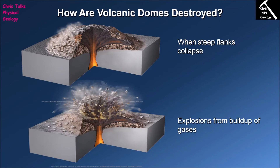The other way a volcanic dome can be destroyed is by explosion. These felsic lavas are very volatile-rich with lots of dissolved gas. If lava is moving up into the core of the volcano but those gases aren't able to escape fast enough, pressure builds up and up, and once it overcomes the strength of the rock, the dome will literally blow itself to pieces. This is a very common way for volcanic domes to end — they will often be destroyed in an explosive eruption.